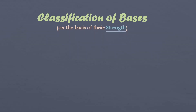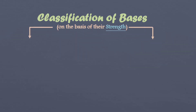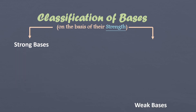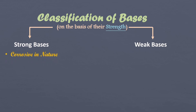Bases can be classified into two types: strong bases and weak bases. Let us learn about them one by one. Strong bases are highly corrosive in nature.